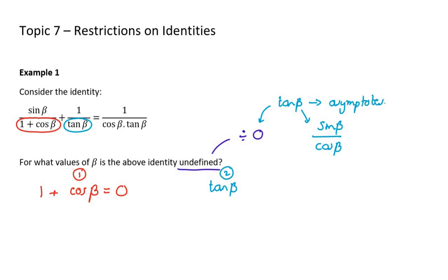And then if I look at my third denominator, I have cos beta times tan beta. So basically cos beta can't equal 0 because then we'll have an undefined situation, and actually tan beta can't equal 0 because then it's almost like two from the same thing. If this was 0, that whole denominator is 0. If this is 0, the whole denominator is 0.